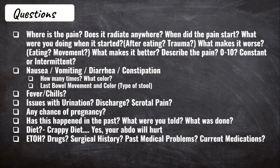You must obtain a pregnancy test on any woman of childbearing age who presents with abdominal pain. This is a cardinal ER rule. You must obtain a pregnancy test on any woman of childbearing age who presents to the ER with abdominal pain.